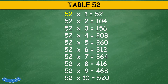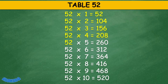Table 52: 52 times 1 equals 52, 52 times 2 equals 104, 52 times 3 equals 156, 52 times 4 equals 208, 52 times 5 equals 260, 52 times 6 equals 312, 52 times 7 equals 364, 52 times 8 equals 416.